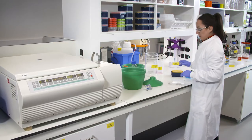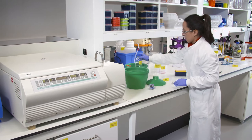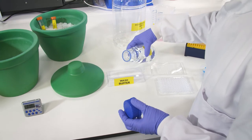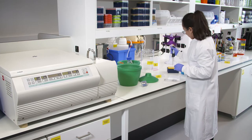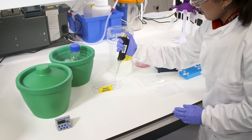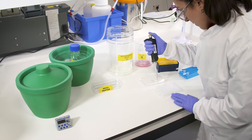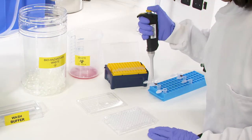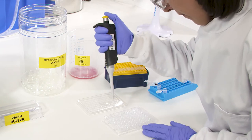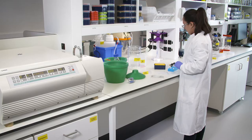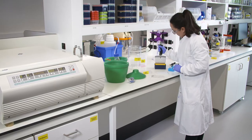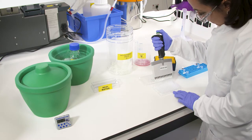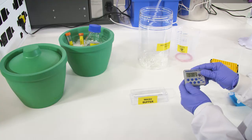Add the diluted antibody solutions from the first step to the corresponding wells. To keep the unstained control well free from antibodies, add wash buffer instead of the antibody solution to this well. Resuspend all the wells to ensure the cells are in contact with the antibody solution. Incubate for 30 minutes at 4 degrees Celsius in the dark.